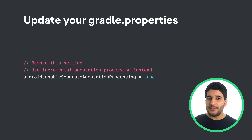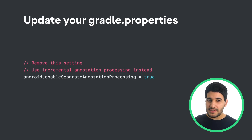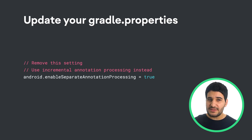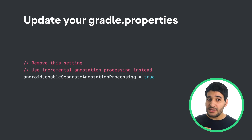The ability to separate annotation processing into a dedicated task has been removed. Instead, you should migrate to using incremental annotation processors to improve build performance. You can now remove this setting from your Gradle properties file, which no longer works. Check out our quick guide on how to use incremental annotation processors in the video description below.